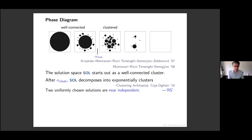So we have this clustering threshold, and this is supposed to be the computational threshold. For each of the models I've described, there are algorithms that work up to just before the clustering threshold and find solutions in polynomial time — probably closer to linear time. But just above the clustering threshold, no algorithms that we know work or are even expected to work. That's not a proof that no efficient algorithms exist, but it's widely believed that this is a computational threshold.